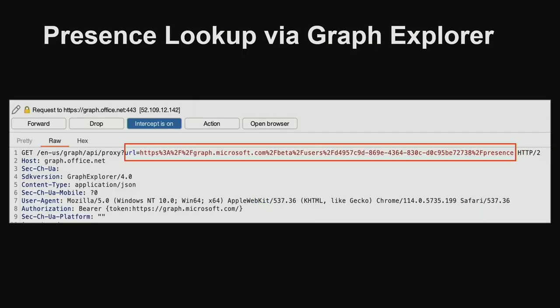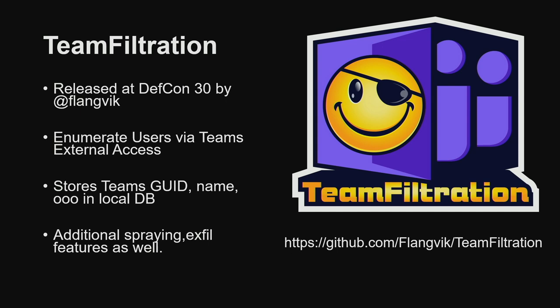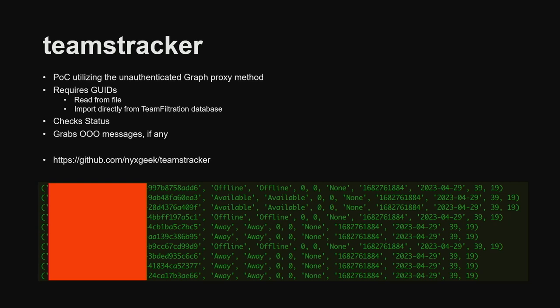They're proxying the Graph request through graph.office.net. With this, if you have the UUID for a user — that long string of characters — you can check their presence via this lookup. Enter Team Filtration, released last year at DEF CON 30 — you can use it to enumerate Teams. Microsoft messed a bit with the external access enumeration, but you can still do it if they have external access enabled. What we're looking for are the GUIDs for Teams lookups. We can pull down a list of user GUIDs and start looking up their presence without any authentication — purely anonymously. There are rate limits to keep in mind.